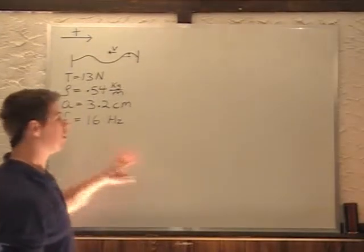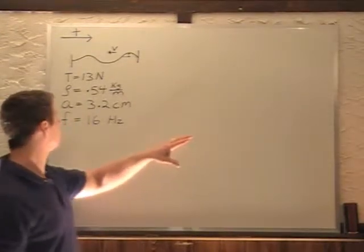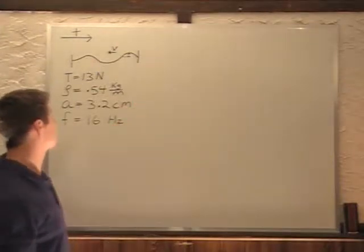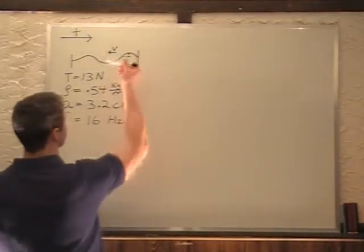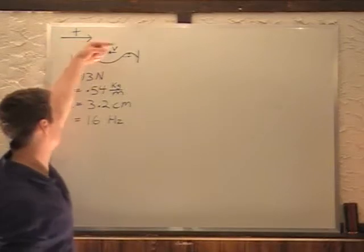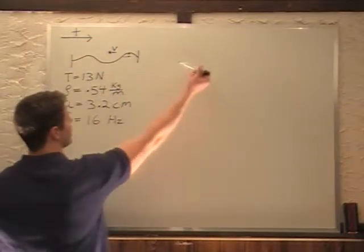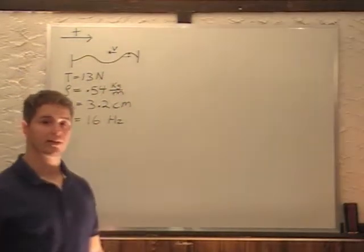And we're told that the wave has a frequency of 16 hertz. Now the last part of the problem that we're told is that the velocity is going in the negative x direction. So to find positive x going towards the right, this wave is traveling to the left. So it's traveling in the negative x direction.